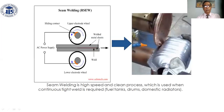Two wheels are pressed together when the welding metal sits at the sliding contact point.